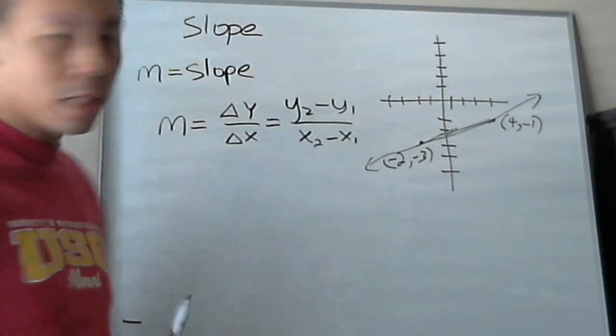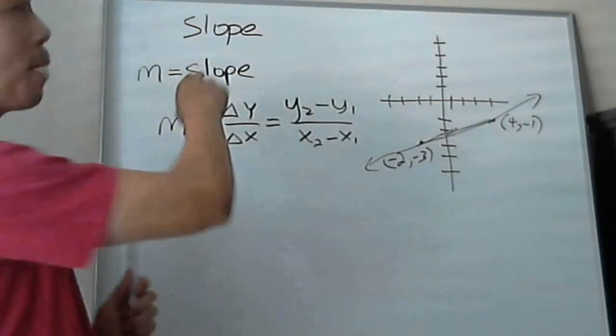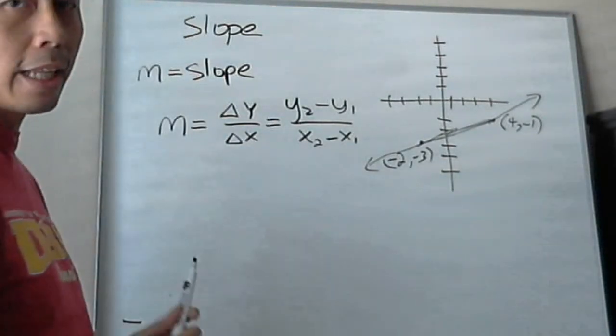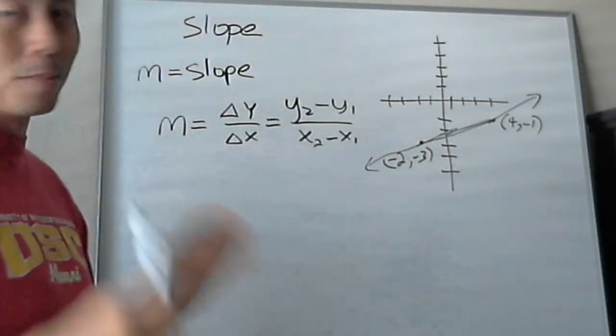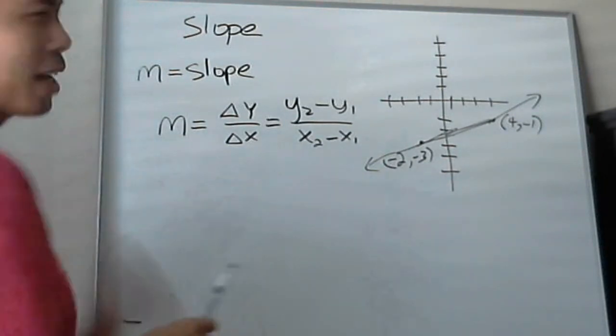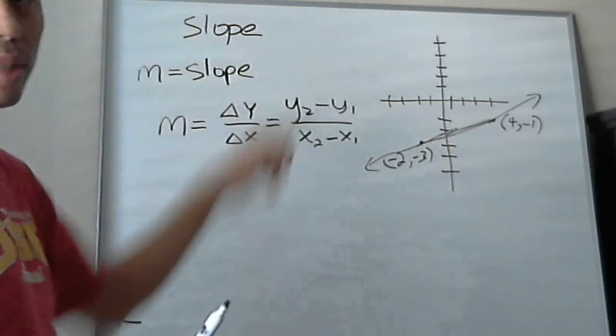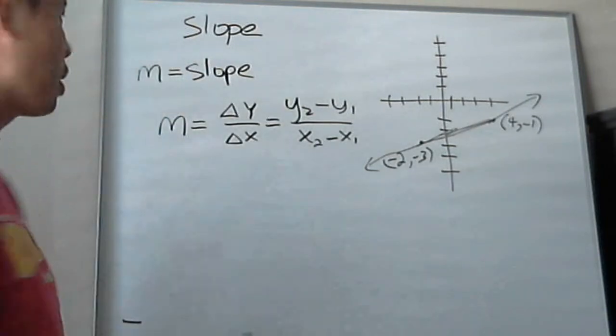So usually in algebra, it's designated by the letter M, and that's what the letter M is when you see it in the book. A lot of times the first time you see it, you're like why is this M? Where does it come from? But it usually always refers to slope in any algebra book.